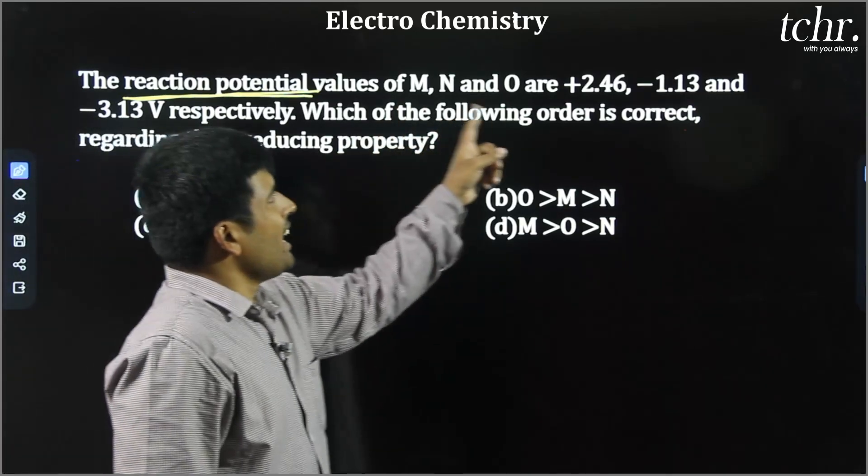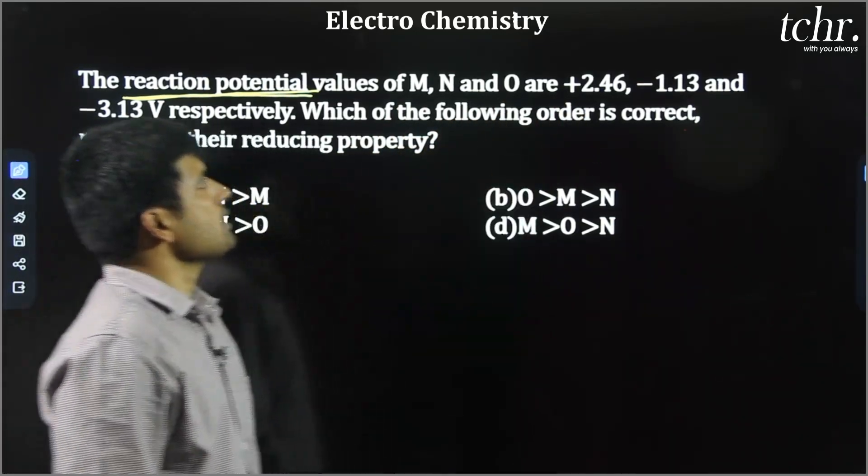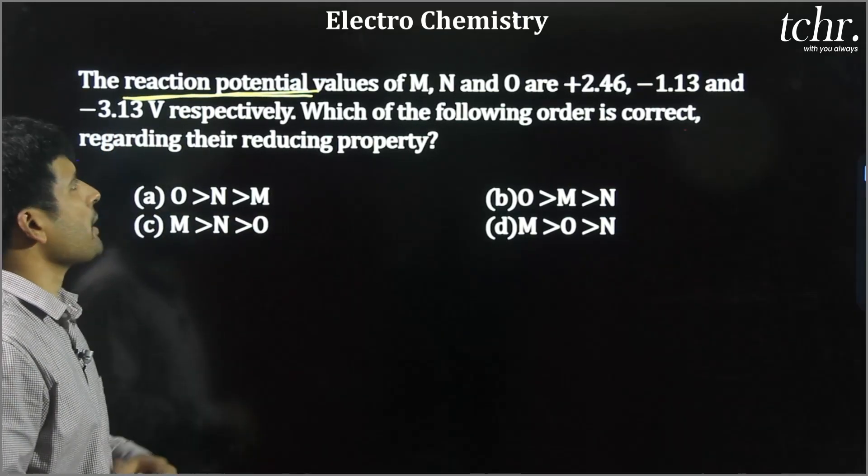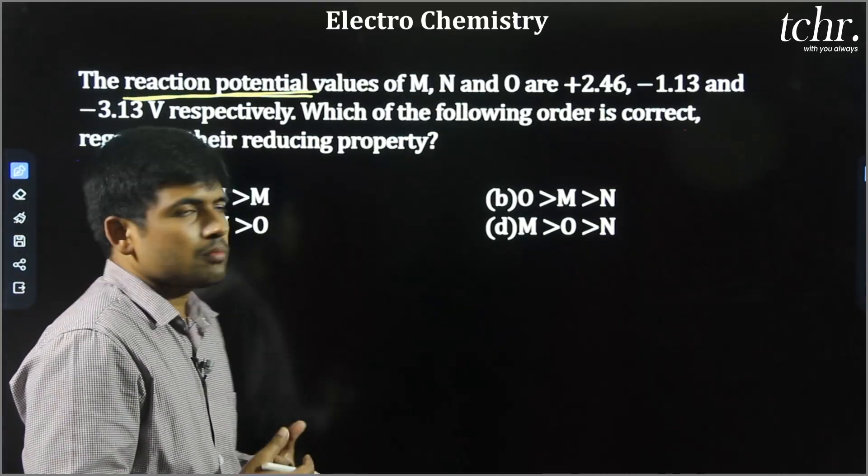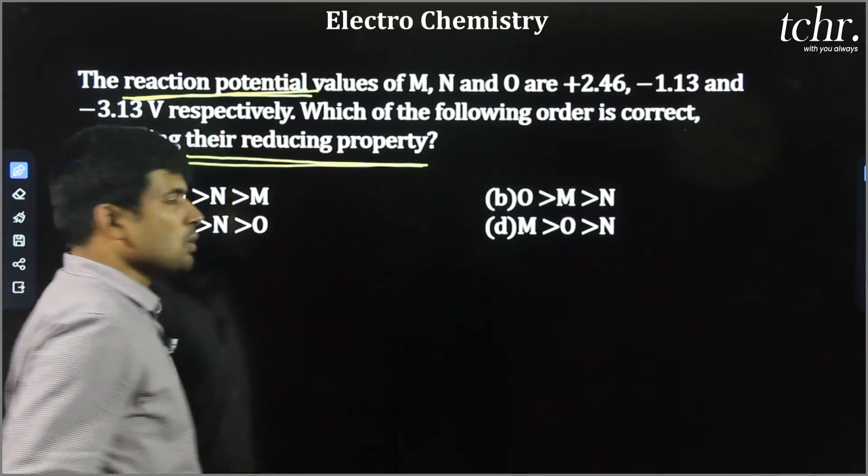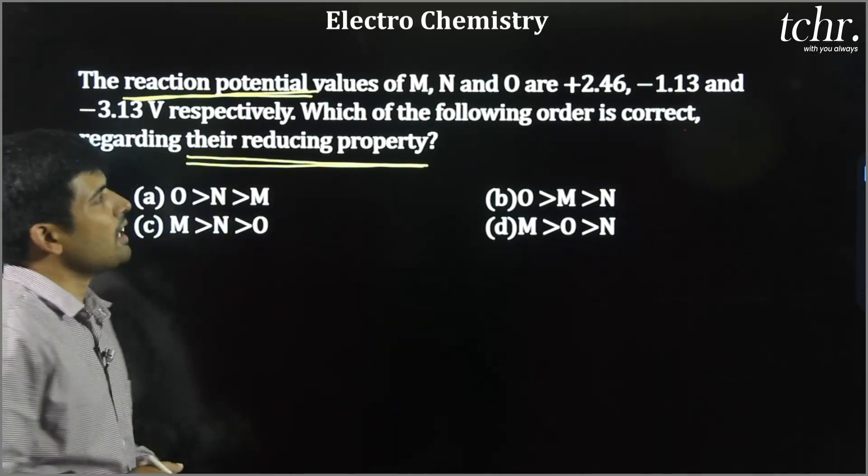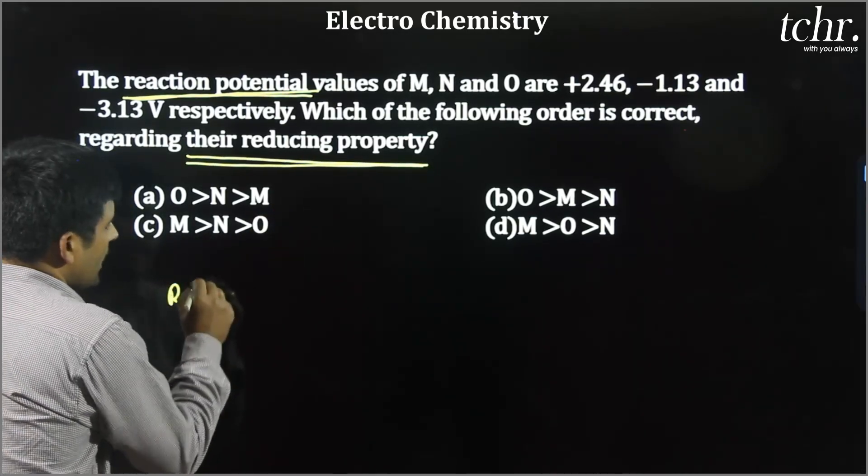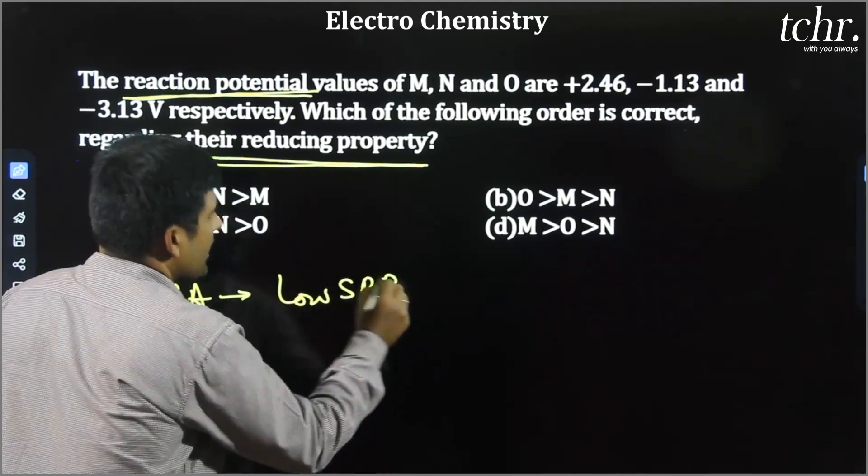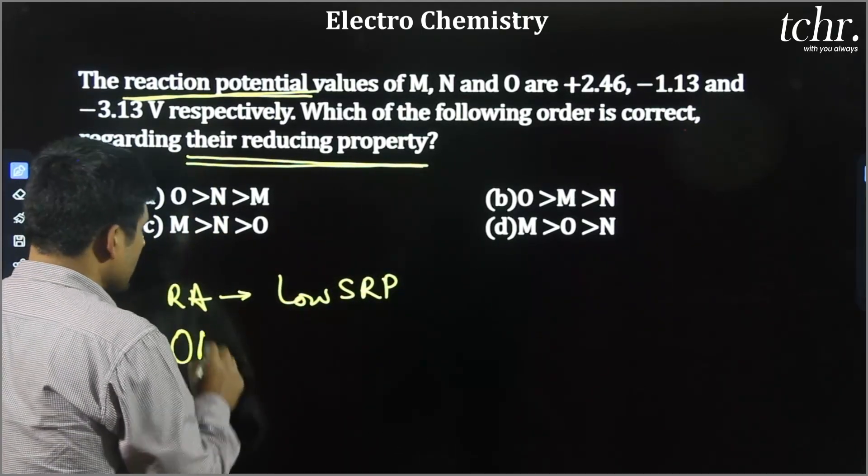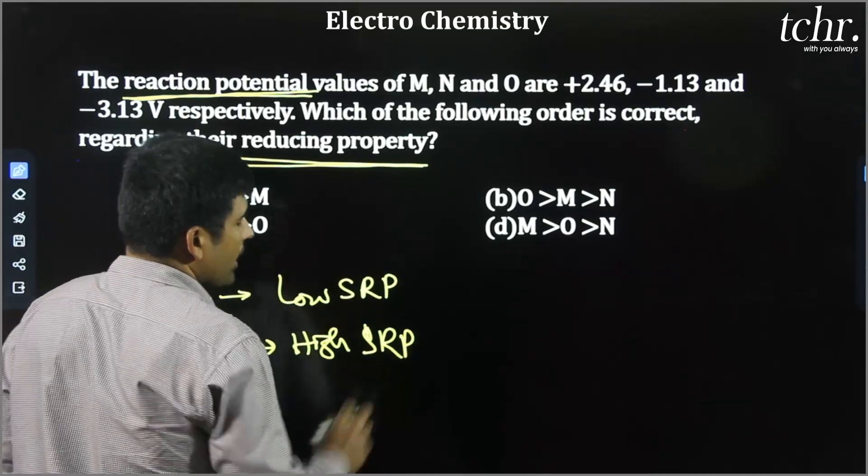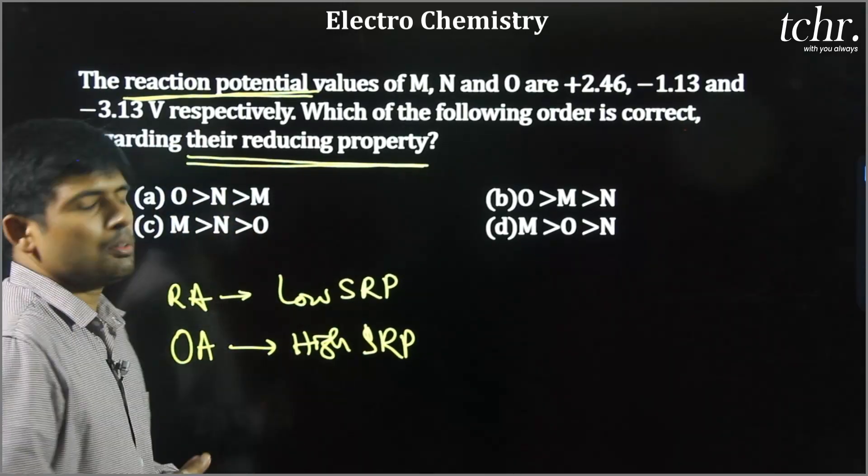The question here is the reduction potential values of M, N and O are +2.46, -1.13 and -3.13 volt respectively. Which of the following order is correct regarding their reducing property? We should know reducing agent is one which has very low SRP that is standard reduction potential. Oxidizing agent is one which has high SRP. Now you are done with question solving.